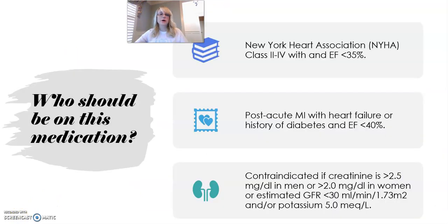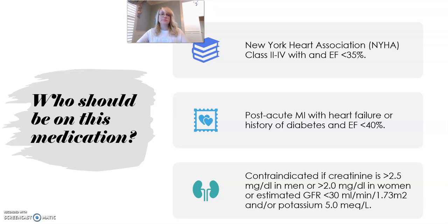So who should be on this medication? For this, we need to talk about the New York Heart Association Class 1 through 4. In order to decide which number to give your patient, you have to know their current level of activity. A good question to ask your patient is: what level of activity produces symptoms — such as shortness of breath, palpitations, or angina?